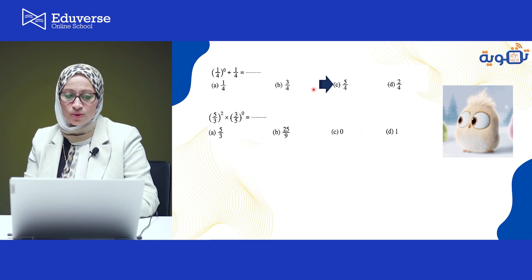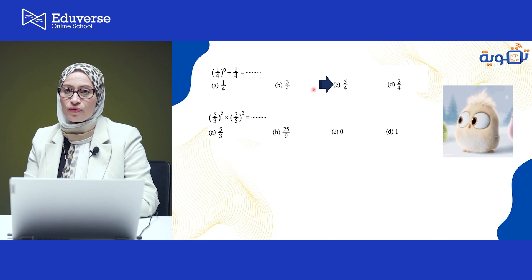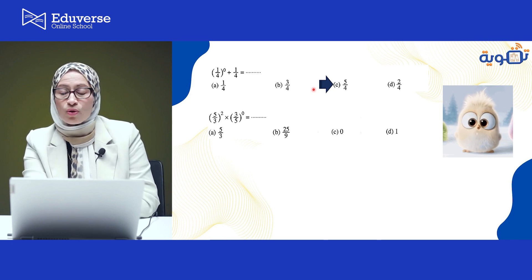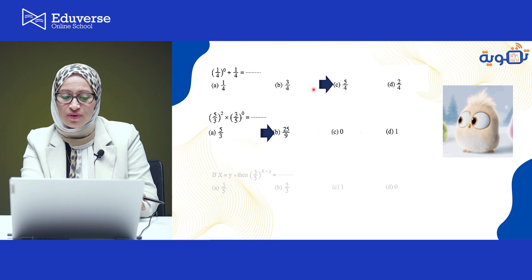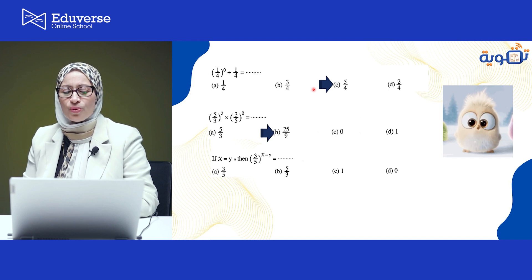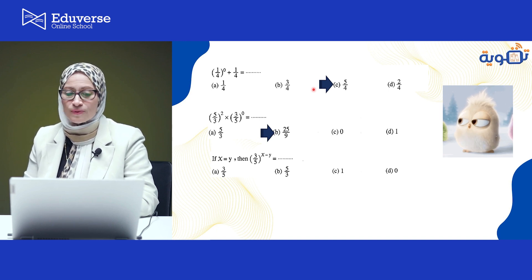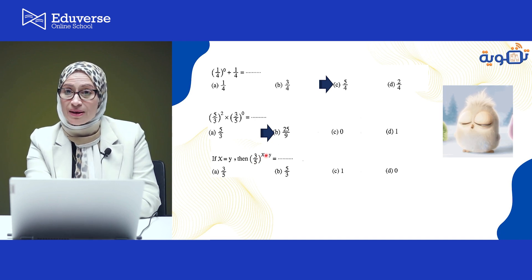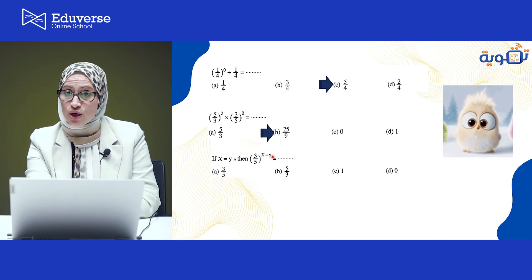(5/3)² × (3/5)⁰: the power 0 part equals 1, and (5/3)² = 25/9. Any number multiplied by 1 stays the same, so the answer is 25/9, which is choice B. Next: if x equals y, then x − y = 0. So (3/5)^(x−y) = (3/5)⁰ = 1, which is choice C.